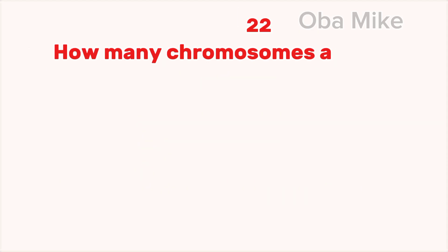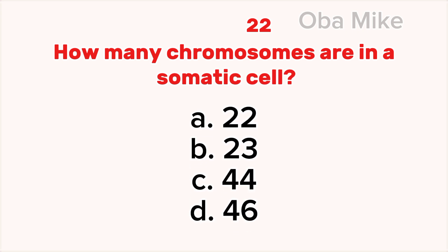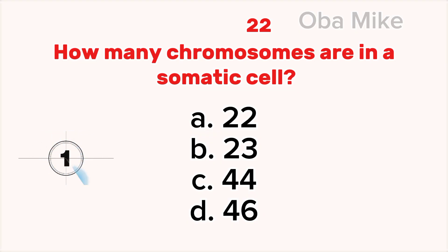22. How many chromosomes are in a somatic cell? A. 22, B. 23, C. 44, D. 46. The correct answer is D. 46.